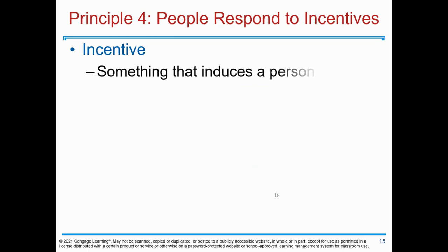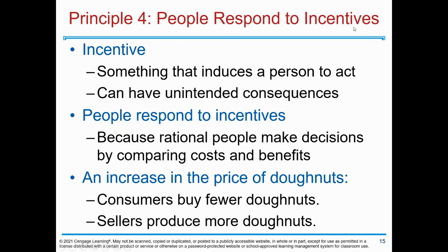Principle four: people respond to incentives. What are incentives? Something that induces a person to act. It can have unintended consequences. People respond to incentives because rational people make decisions by comparing costs and benefits. An increase in the price of donuts means consumers buy fewer donuts, while sellers produce more donuts.